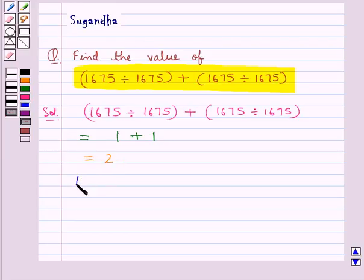Thus we have 1675 divided by 1675 plus 1675 divided by 1675 is equal to 2.